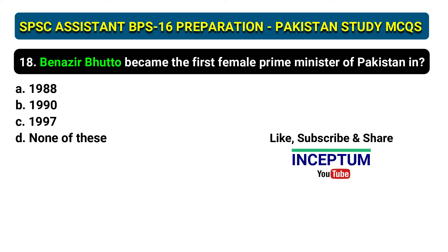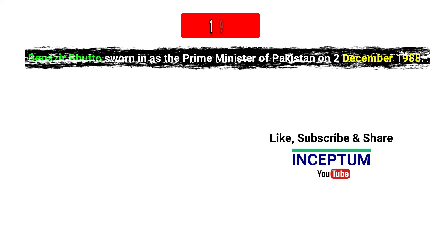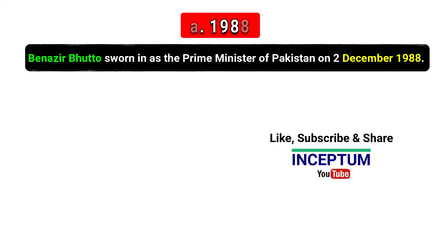Question 18: Benazir Bhutto became the first female Prime Minister of Pakistan in — options: 1988, 1990, 1997, none of the above. The correct answer is option A, 1988. Benazir Bhutto was sworn in as the Prime Minister of Pakistan on 2nd December 1988.